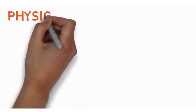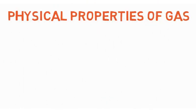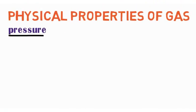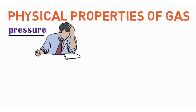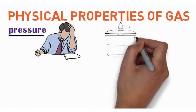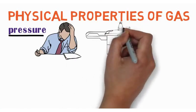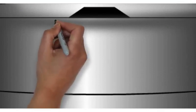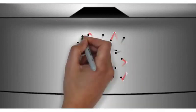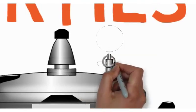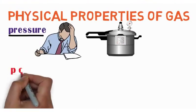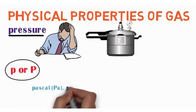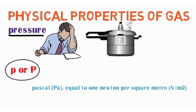Now, physical properties of gas. Number one is pressure - the amount of force applied to a particular surface of an object per unit area. For example, there is some gas in this cooker, and the gas molecules will collide with each other and the walls to create pressure. The symbol of pressure is P, and the SI unit is Pascal, equal to 1 Newton per square meter.